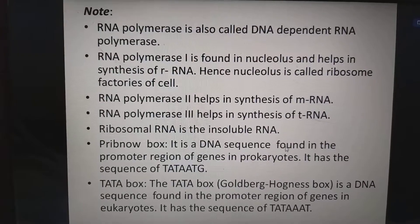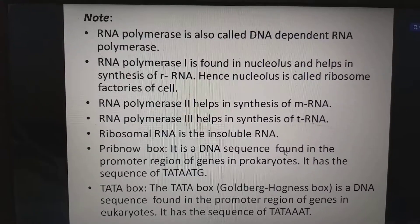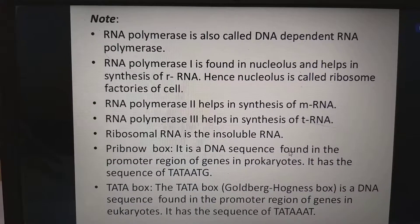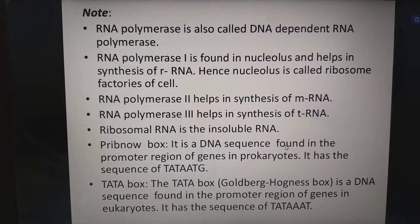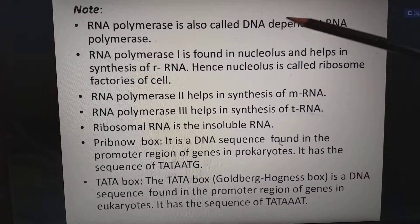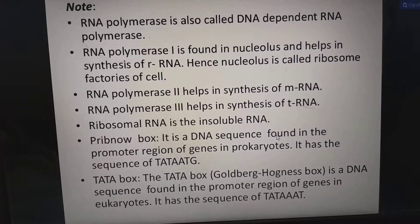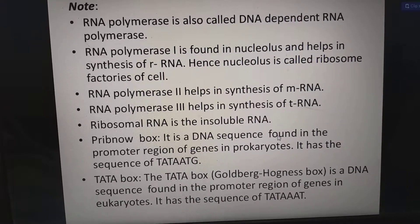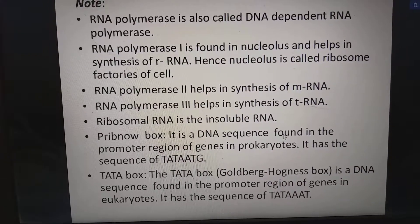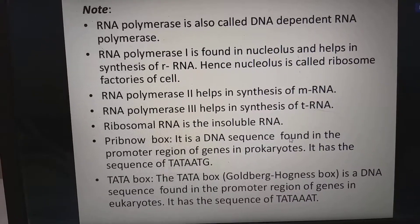Coming to the note, the DNA polymerase is also called as DNA dependent RNA polymerase because RNA polymerase will add RNA nucleotides from the DNA. Through the transcription process, from DNA only the RNA will be derived. RNA polymerase 1 is found in nucleolus and helps in synthesis of rRNA, hence we call the nucleolus as ribosome factories of the cell. RNA polymerase 2 helps for synthesis of mRNA. RNA polymerase 3 helps in synthesis of tRNA.